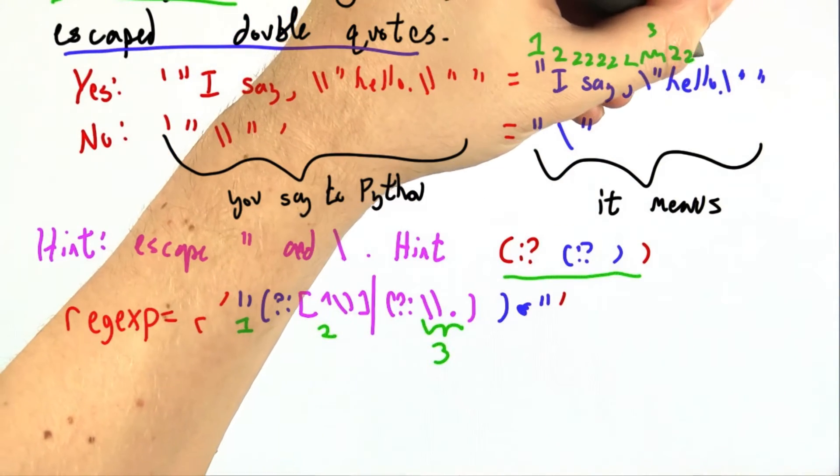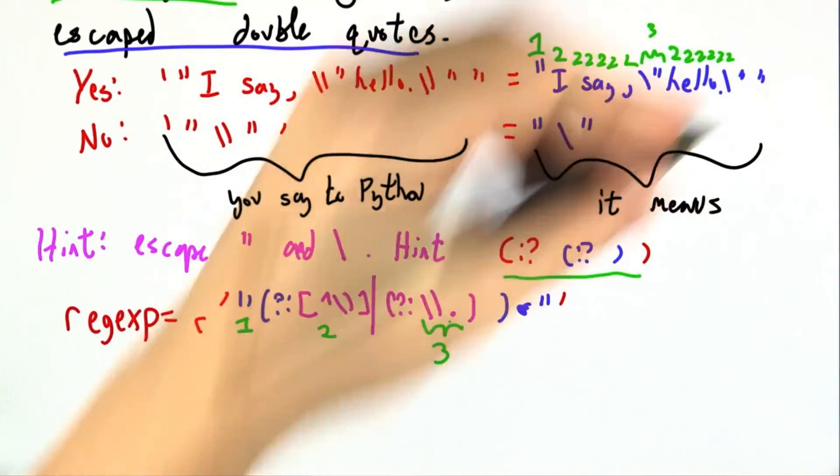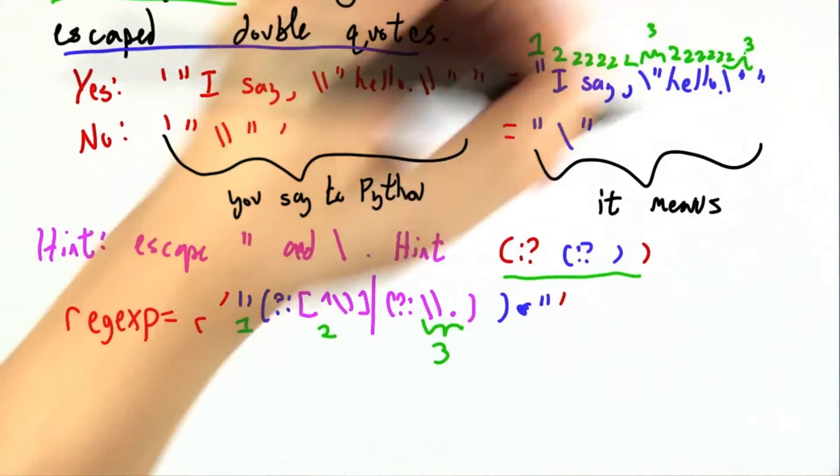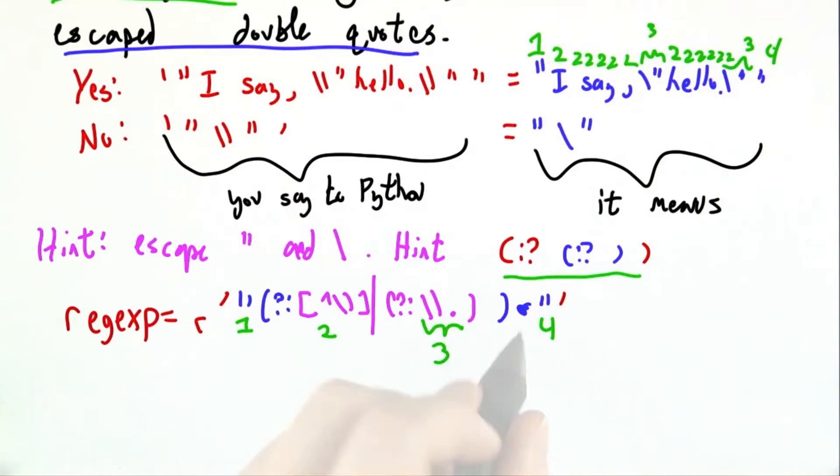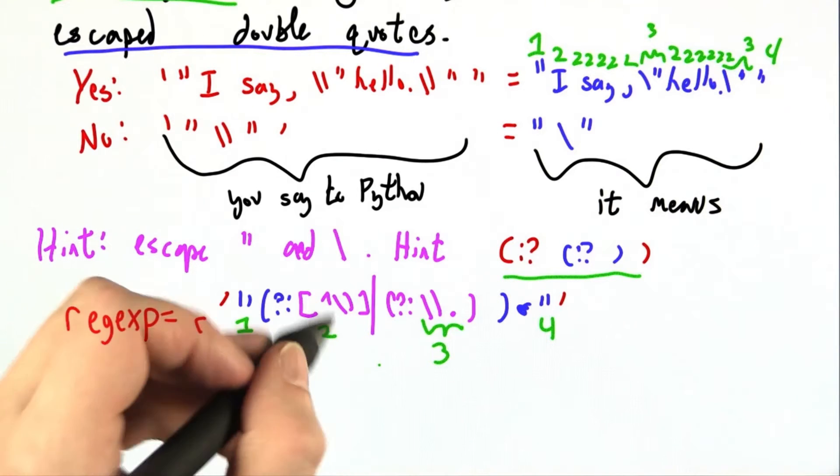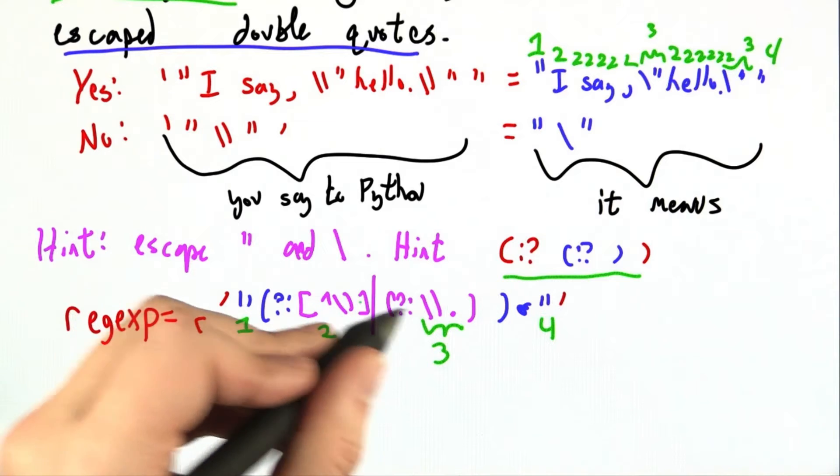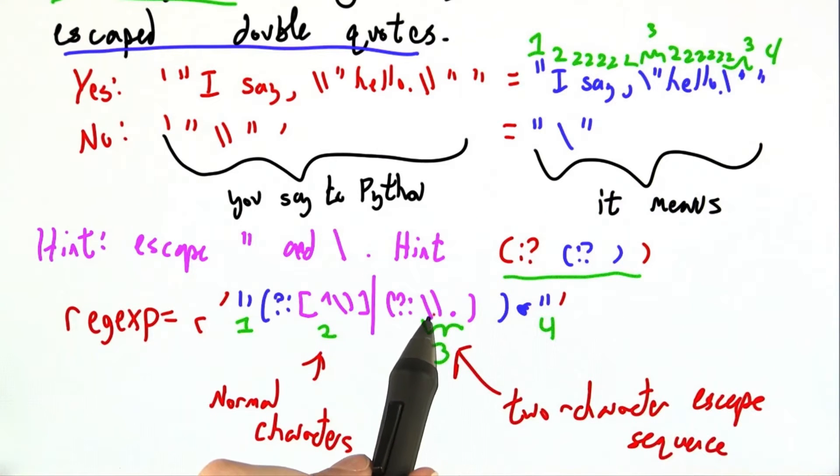And then we're back to matching twos, h-e-l-l-o dot. And now we have another backslash and a quote, so these two together will be another three. And then this part at the end is number four. So I have zero or more copies of my string body. The elements of my string body are either normal characters or two character escape sequences. And although this looks like three characters, it's really just two. I have to escape the backslash.